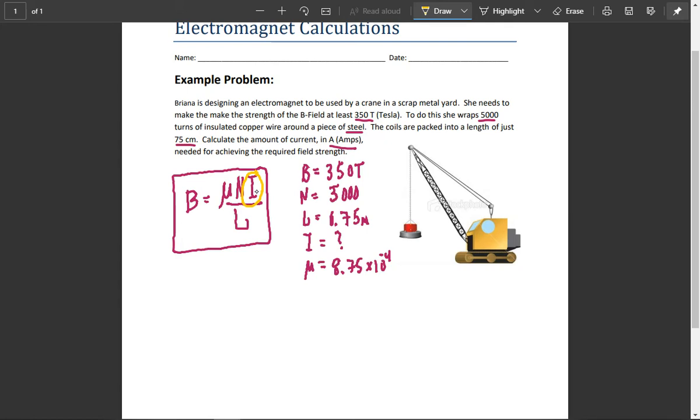We're going to multiply both sides by L, so L's divide out. Then we basically divide by μ times N on the bottom, which means we have to divide this side by μ times N.